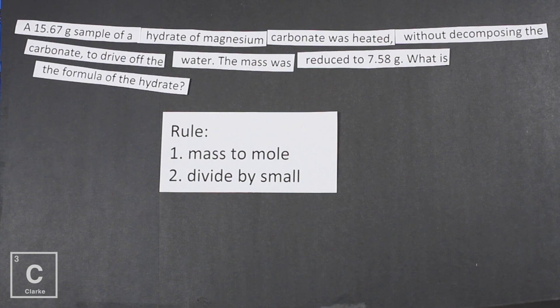In this question, it told us the mass of the hydrate: 15.67. It also told us the mass of the anhydrate — it just said 'this is the mass after we've driven off the water.' That's the anhydrate. So if we subtract those numbers, that gets us the mass of water. These rules should look pretty similar to the rules of empirical formula — it's the middle two rules. We're going to do mass to mole, divided by small.